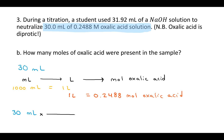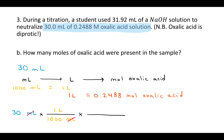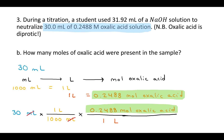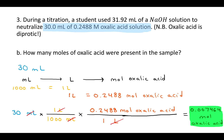I do a conversion: fraction bar, units on top go on the bottom — milliliters on the bottom, 1 liter on top. Then another conversion: liters on the bottom, 0.2488 moles of oxalic acid on top. Liters cancel and I'm left with moles of oxalic acid. Taking 30 divided by 1,000, then times 0.2488, you should get 0.007464 moles of oxalic acid in the sample.